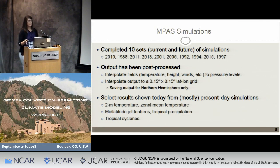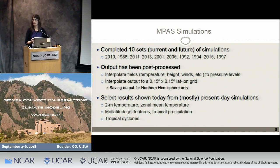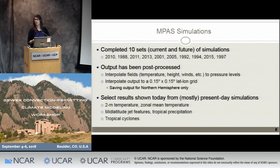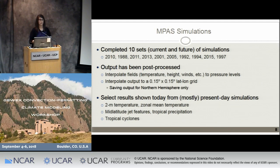We've completed our 10 sets of simulations and have post-processed our output. Post-processing involves interpolating 3D fields to select pressure levels and then interpolating all output to a 0.15 degree by 0.15 degree lat-lon grid. Because of space constraints, we're only saving limited variables and data for the northern hemisphere only, but we are saving restart files once a month — so if we or anyone else wants to look at a certain time period or event in more detail, we can use the restart files to do that.